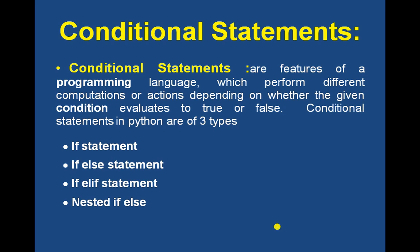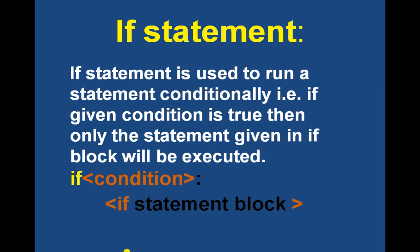Next are conditional statements. Conditional statements are features of a programming language which perform different computations or actions depending on whether a given condition evaluates to true or false. There are four types: if, if-else, if-elif, and nested if-else. The if statement is used to run a statement conditionally — if the given condition is true, then only the statements in the if block will be executed, as shown in the syntax.